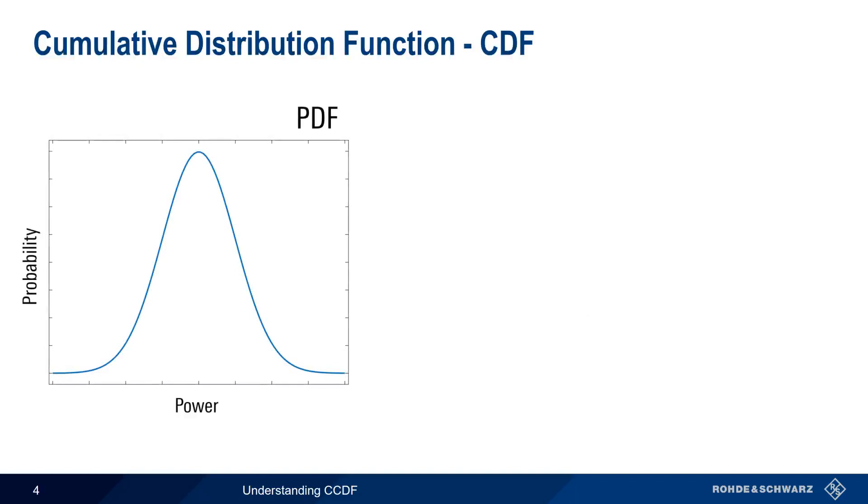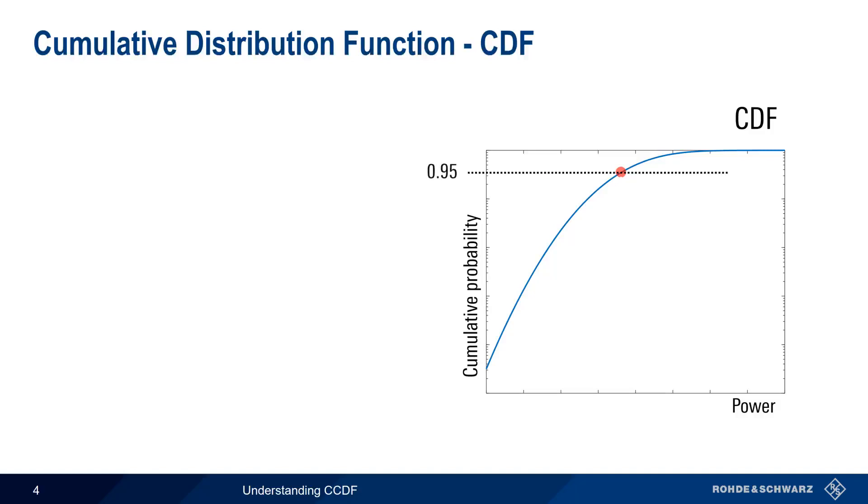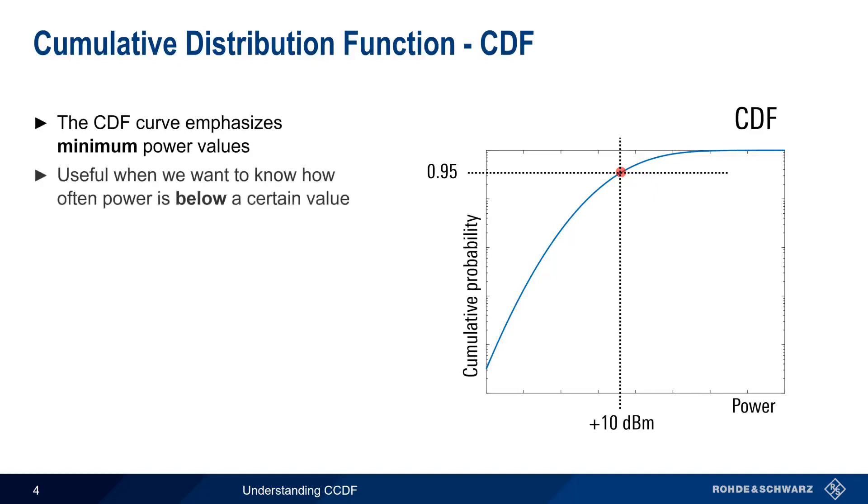If we take our Probability Density Function and integrate over the entire function, the result is the Cumulative Distribution Function, or CDF. Let's pick a point on our CDF curve. At this point, we can say that 95% of the time, the power level is plus 10 dBm or less. CDF curves emphasize minimum power values. In other words, a CDF curve is useful if we want to know what percentage of time the signal's power is below a certain value.